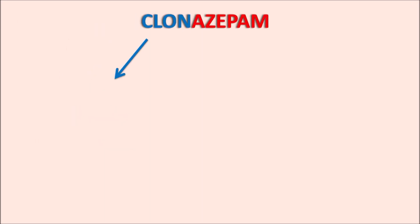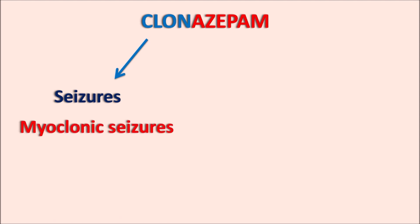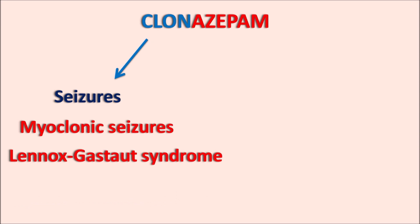Clonazepam is useful as an anticonvulsant agent; it is used to treat different types of seizures. Particularly, this drug can be used to treat myoclonic seizures, which involve muscle spasms and jerky movements involving the shoulder, neck, and upper arms. Clonazepam is also indicated in one type of severe seizure: Lennox-Gastaut syndrome, which includes severe convulsions and muscle spasms. Similarly, Clonazepam can also be used in akinetic seizures, also called atonic seizures or drop attacks, where severe muscle spasms cause patients to fall.